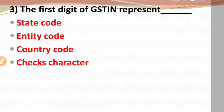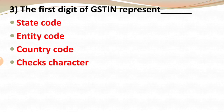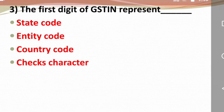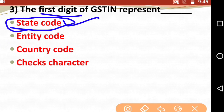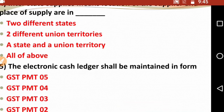Question three: The first digit of the GSTIN represents — state code, entity code, country code, or check character? Remember, the first digit of the GSTIN always represents state code. This is a technical fact to remember: the first digit of GSTIN represents state code.